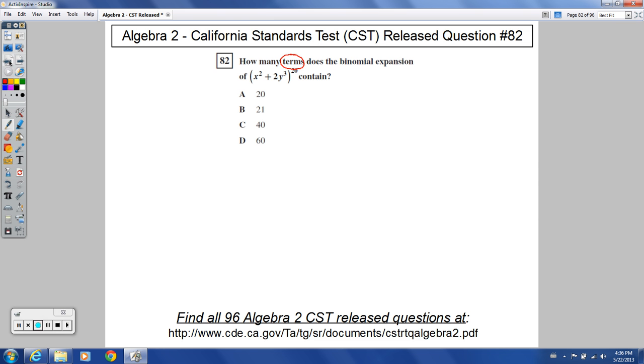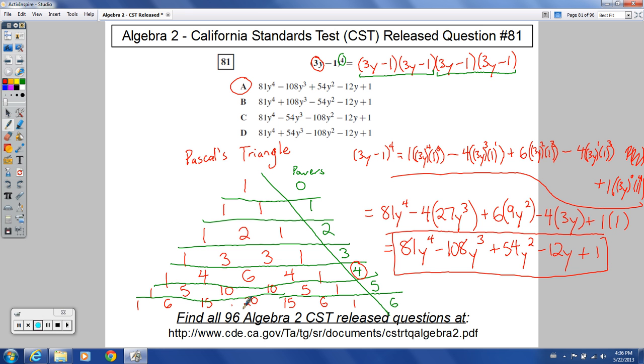Go back to the previous question, I'll do that here. Think about Pascal's triangle. If you had a zero power, you had one term. If you had a first power, you're going to have two terms. Second power, you'll have three terms and so on. Notice, each time you have one more term than the power itself.